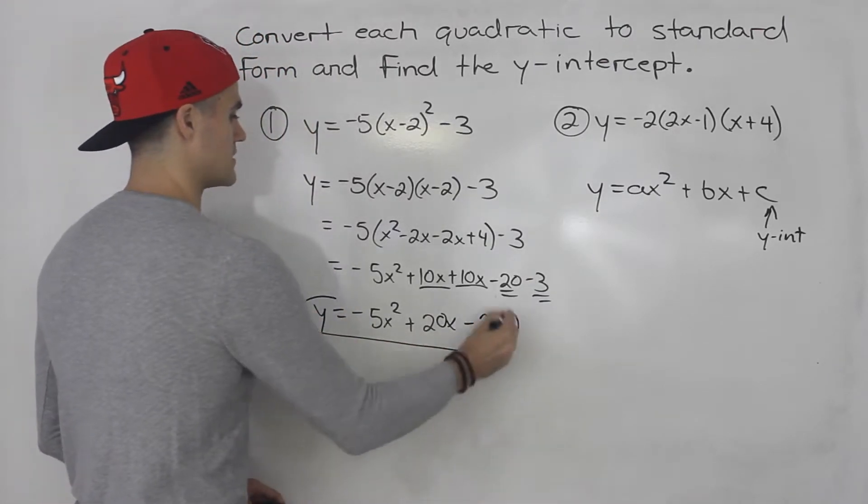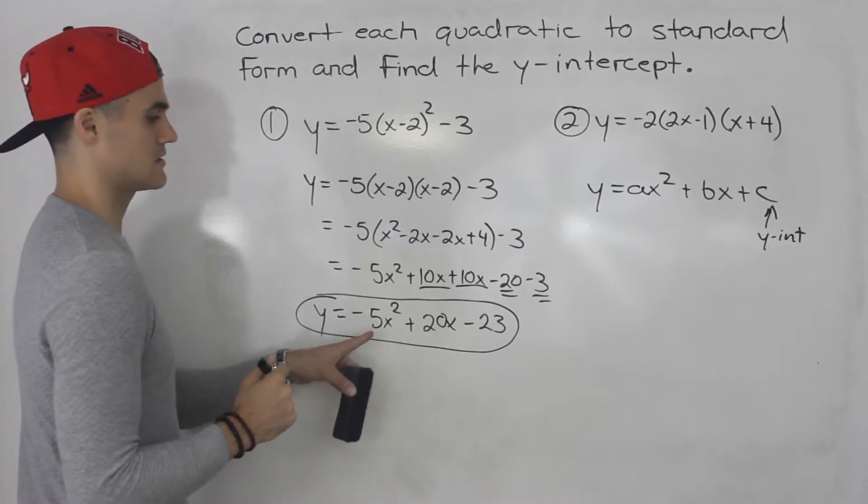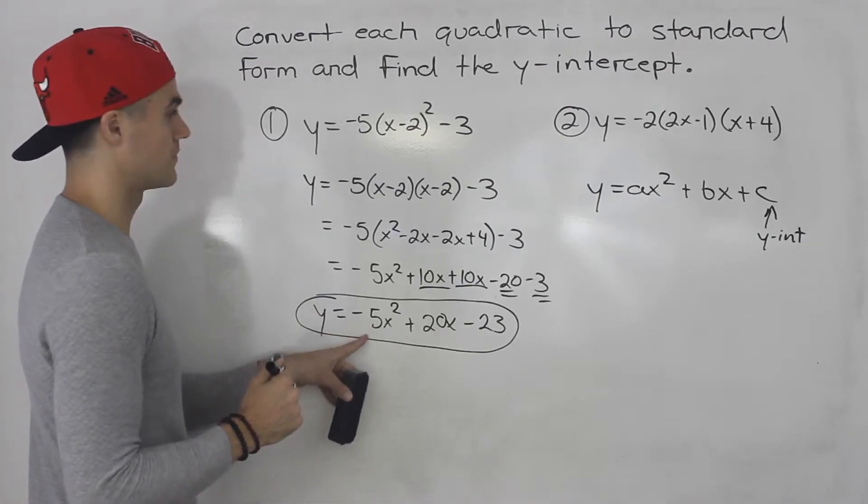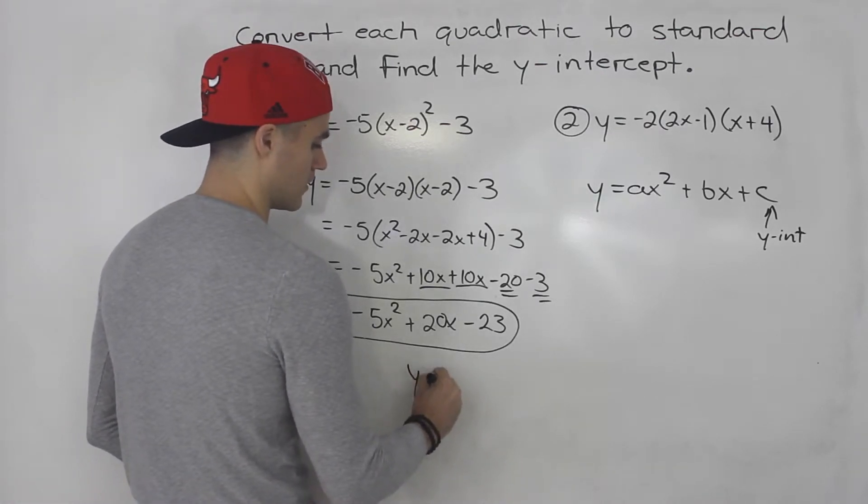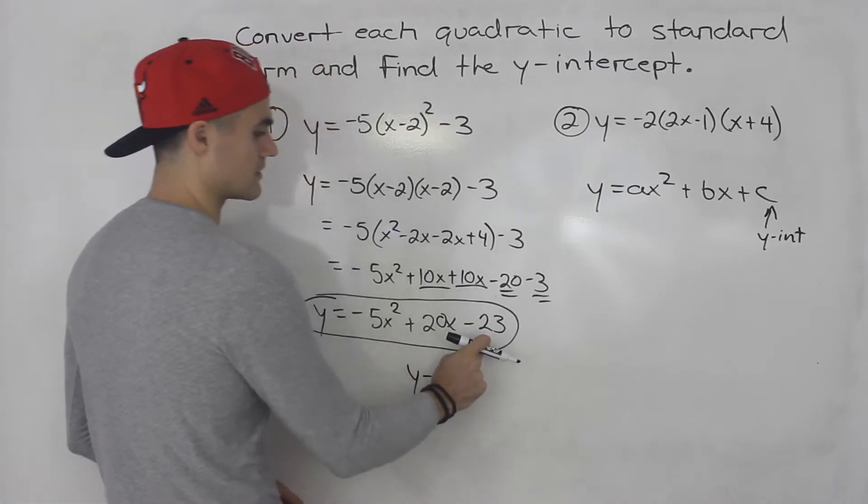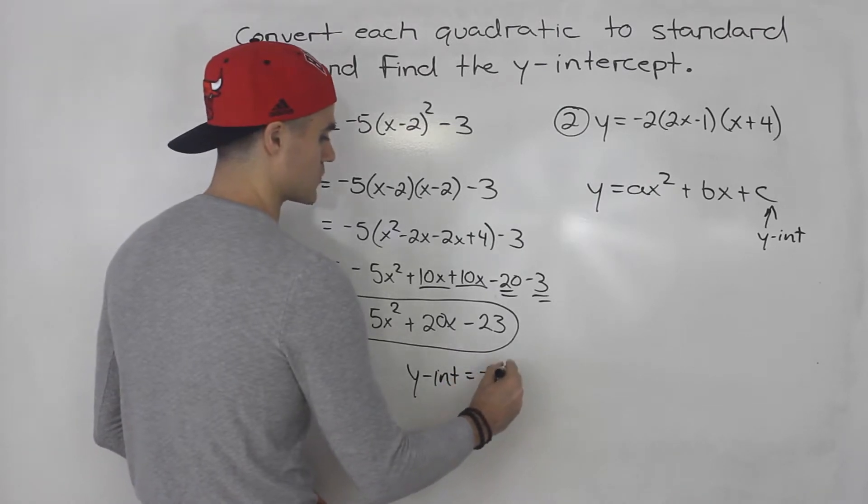So that is the answer for part 1. That is the standard form quadratic from this vertex form. And then what's the y-intercept? Well, it's just simply that c value which is negative 23.